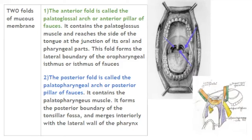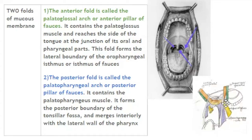Apart from the borders and surfaces of the soft palate, there are also two folds of mucous membrane: the anterior fold and the posterior fold. These are formed as coverings of mucous membrane on the muscles of the soft palate. There are two muscles which descend from the soft palate — one towards the lateral surface of the tongue and one towards the lateral wall of the pharynx respectively. As these descend downwards, they are enclosed in folds of mucous membrane forming the palatoglossal arch and the palatopharyngeal arch.